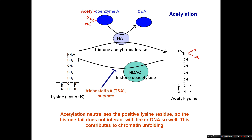HDACs can be inhibited by several compounds and drugs. In the lab we can use trichostatin A or sodium butyrate, and there are also many HDAC inhibitors used in the clinic for cancer treatment or schizophrenia treatment. Treatment of cells with any of these HDAC inhibitors will shift the equilibrium so we have more acetylation in the cell, and acetylation is typically associated with active transcription.